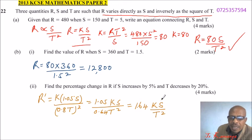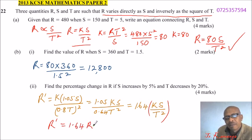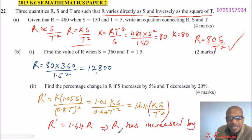You realize this part here is the same as our R. So the new R will be 1.64 of the old R, implying that R has increased by 64%. That's how you work out that question.